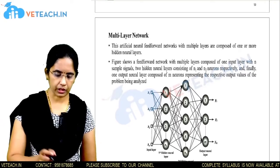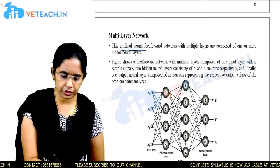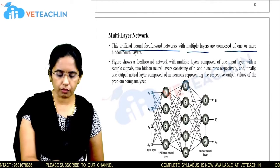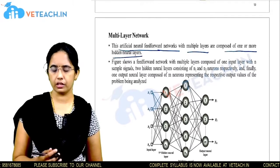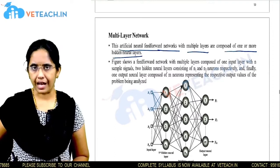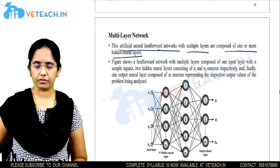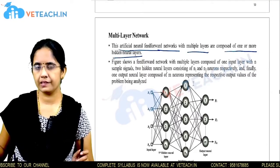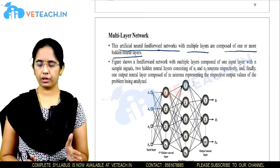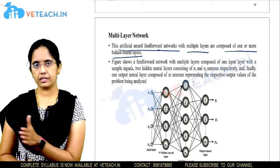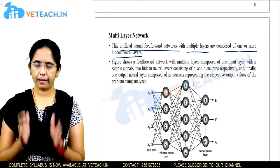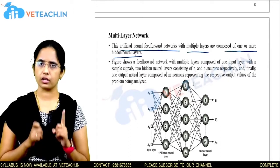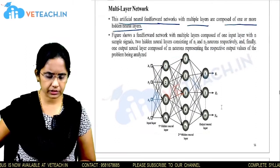A multi-layer artificial neural feed-forward network will have multiple layers composed of one or more hidden layers. We have already seen different architectures of ANN. In a multi-layer neural network you have one input layer, n number of hidden layers, and one output layer. The number of hidden layers is not fixed — you can have n multiple hidden layers or only one hidden layer.